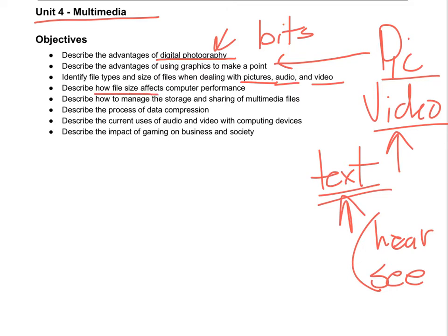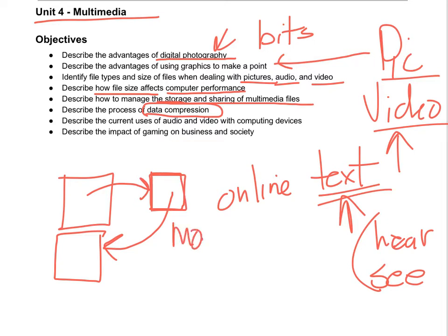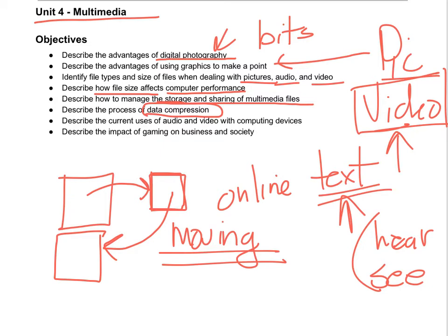Large files affect computer performance, and we need to think about how we store information. Data compression — which we haven't talked about yet — can take a file and make it smaller. When you need to use it, you decompress it back to the original size. Google automatically compresses and adjusts video to fit YouTube, so it might not be the exact video you uploaded. Google and others are working on very good compression algorithms.